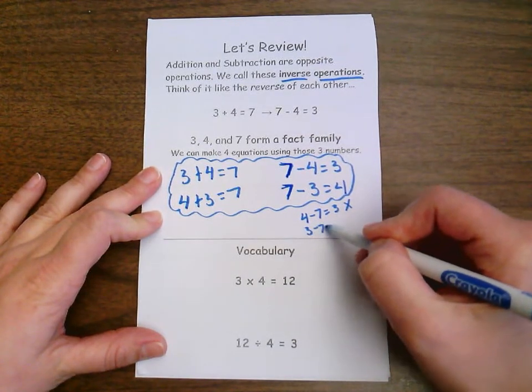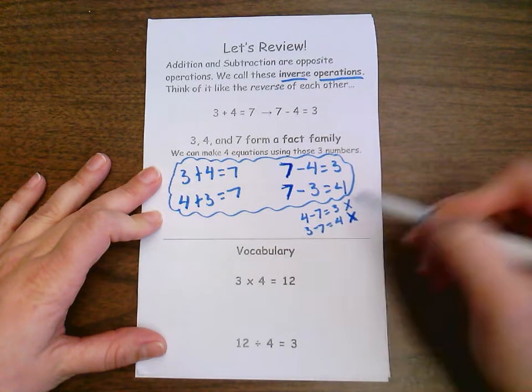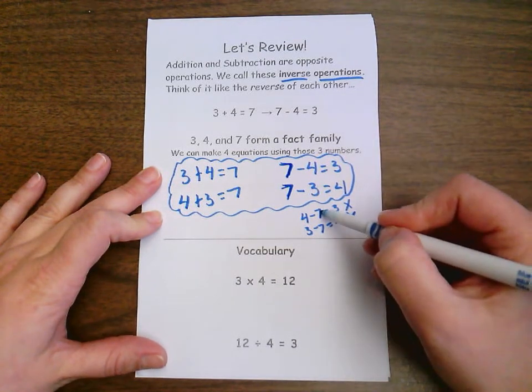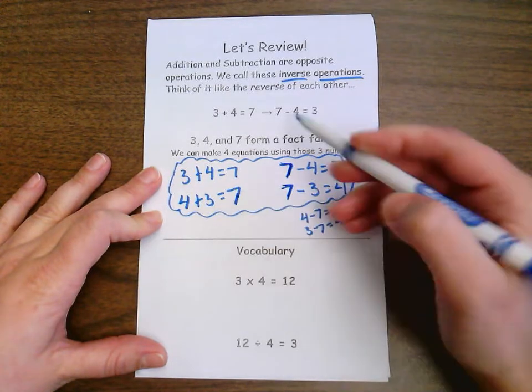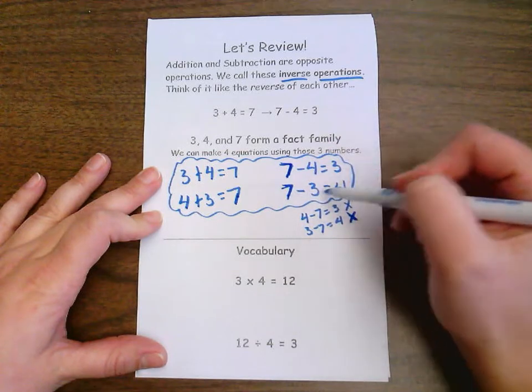The same thing would be three minus seven equals four. That also does not work. It's not correct. Whenever we're doing our subtraction, we know that our previous sum becomes our total over here that we're going to subtract.